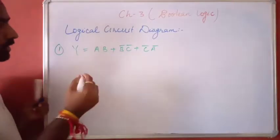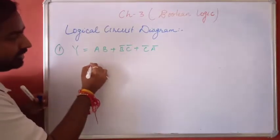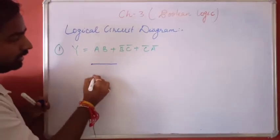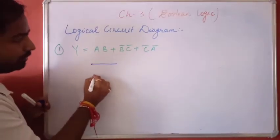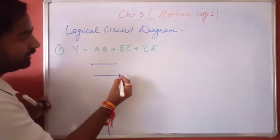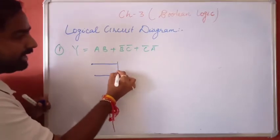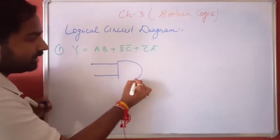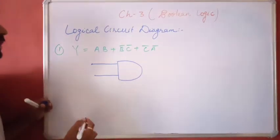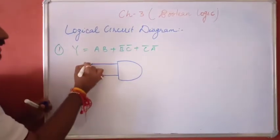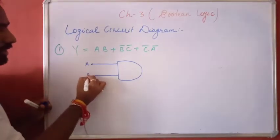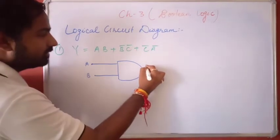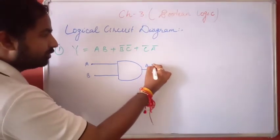Suppose this is input A, this is input B. In A and B, AND operation is there. This represents A·B.